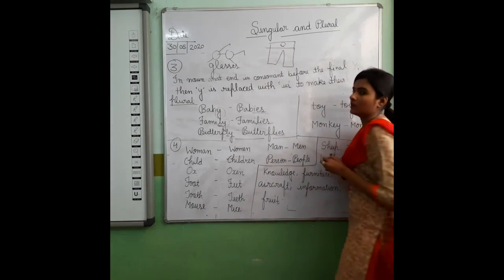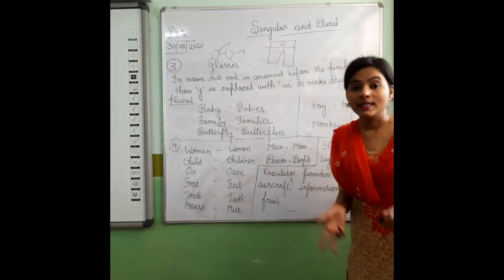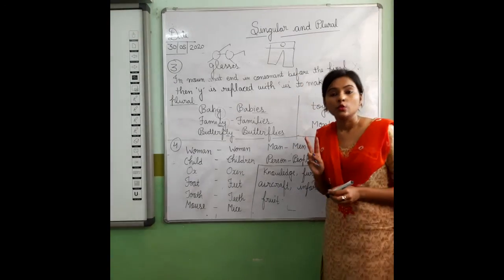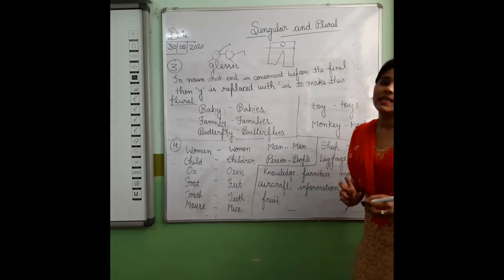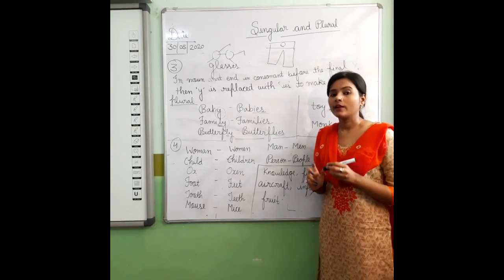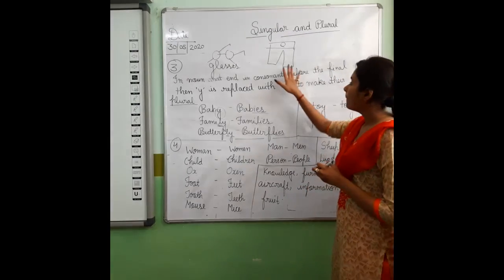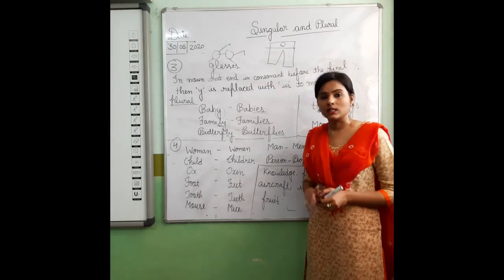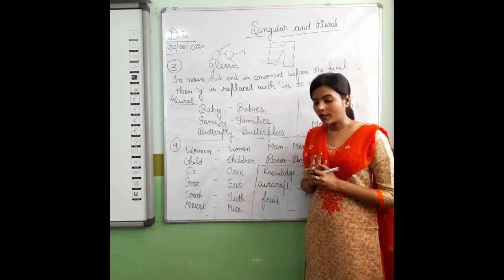And kuch nouns aisi hoti hain jinke baas already two pairs hoti hain — toh woh hamesha plural form mein hoti hain. Like: pant → pants, trouser → trousers, jeans, scissors → glasses. The correct words are: pants, trousers, glasses, jeans.